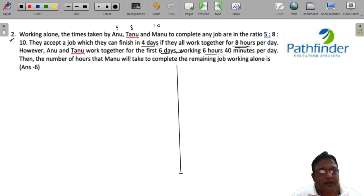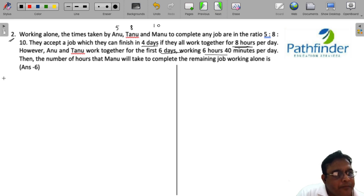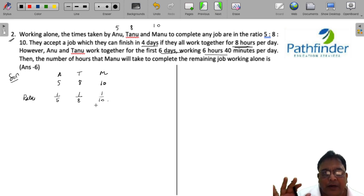Obviously the first thing that we are aware of here is that Anu, Tanu, and Manu take days in the ratio of 5, 8, and 10, which means their rates of work must be in the ratio of 1 by 5, 1 by 8, as to 1 by 10. Rates of work can also be known as one day work or one hour work. So on simplifying the ratio of rates, we will get 8 as to 5 as to 4 as the ratio of rates.